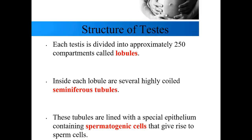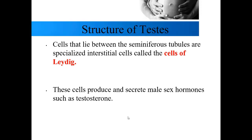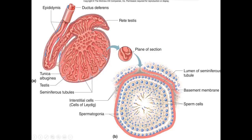Each testis is divided into several small compartments called lobules — about 250 lobules per testis. Inside each lobule is a highly coiled structure called the seminiferous tubules, lined with specialized epithelial tissue containing spermatogenic cells that give rise to sperm cells. The cells that lie between the seminiferous tubules are specialized interstitial cells — formally called the cells of Leydig — and these cells produce male sex hormones like testosterone.